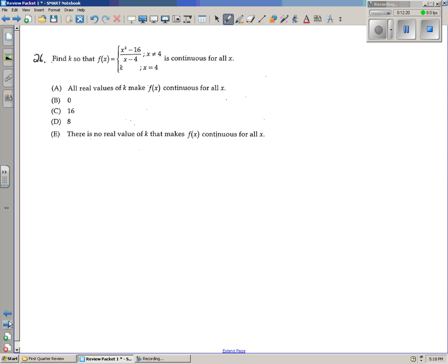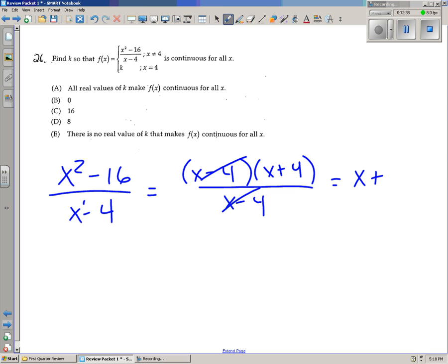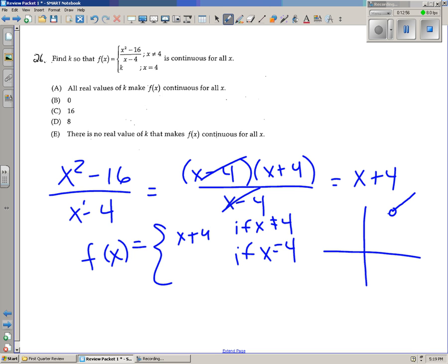26, we want to find k so that this function is continuous. So if you notice, x squared minus 16 over x minus 4 can be simplified if you factor the numerator. Very similar to the problem we had on here. So this function is really f of x is x plus 4 if x is not equal to 4, and it's something if x is 4. Well, this is, right now the function is just a line with y-intercept of 4 and slope of 1 with a hole. So if we figure out f of 4, if we just plug into the top rule, 4 plus 4 is 8. So if we redefine this function to be 8 when x is 4, that'll fill the hole. So that's the answer.